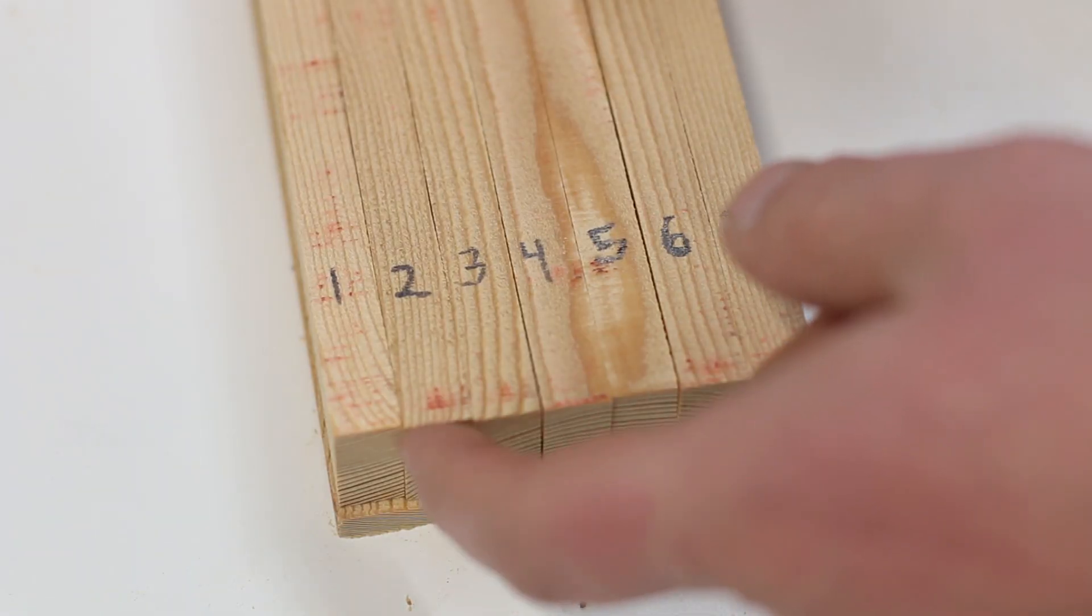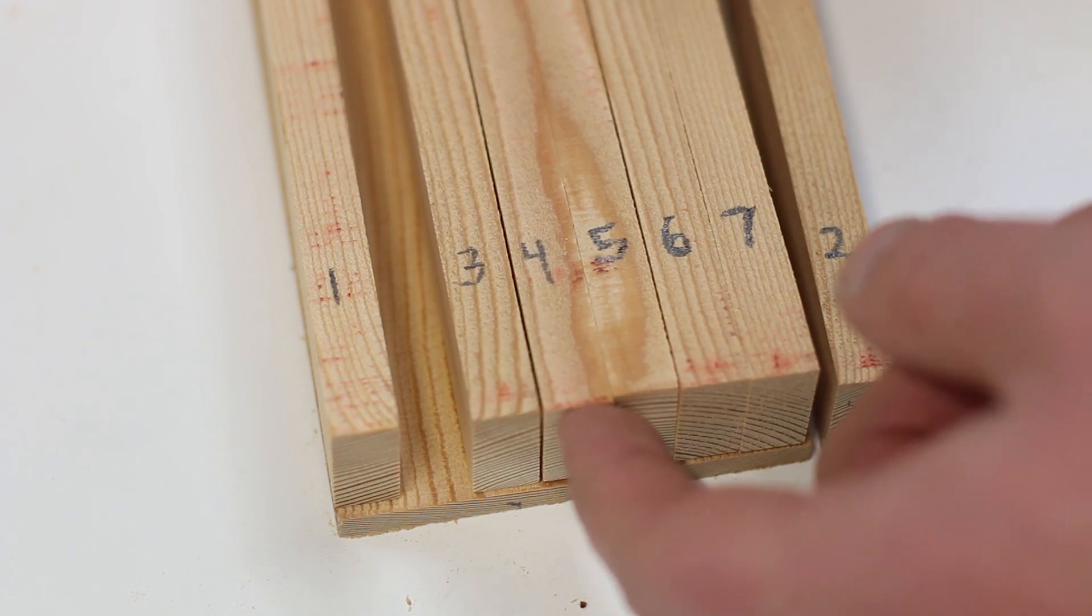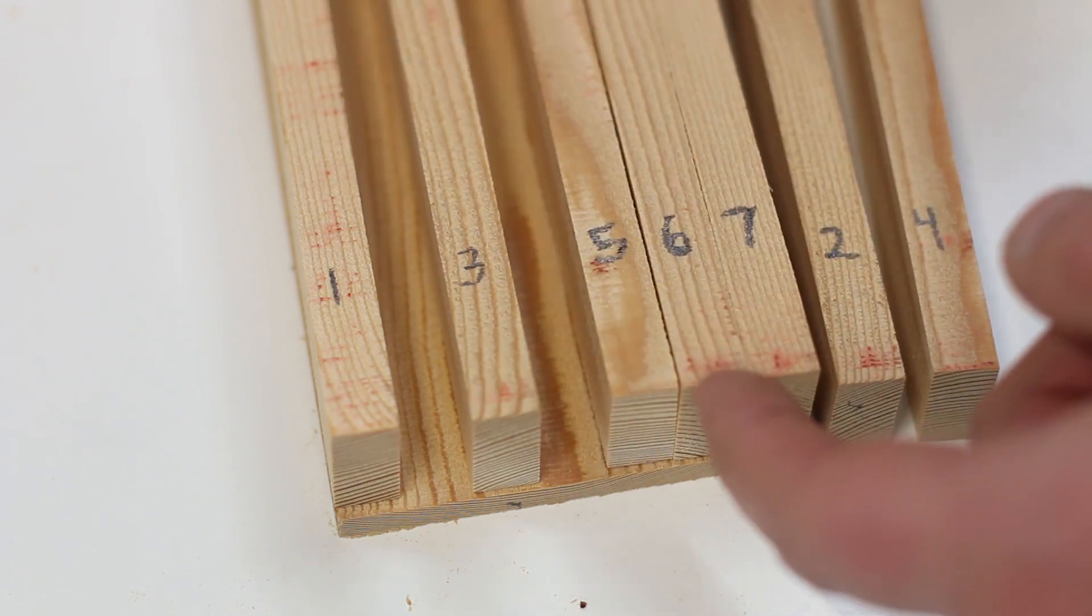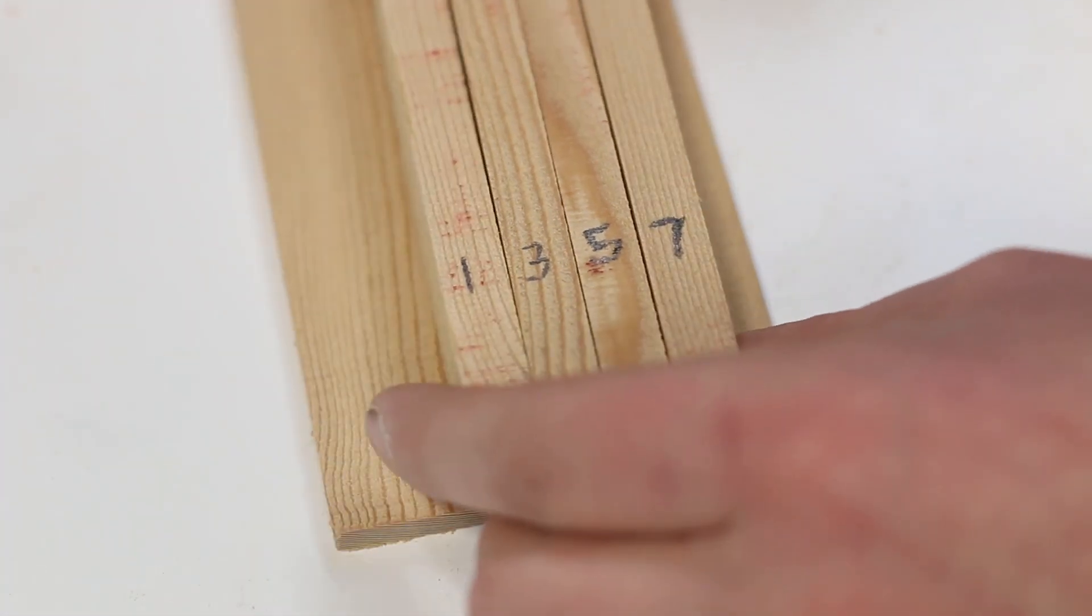Once the pieces were cut, I labeled them 1 to 7 and removed numbers 2, 4, and 6. These will become the moving pins of the lock, and 1, 3, 5, and 7 will become the structure or the chamber walls for the pins.